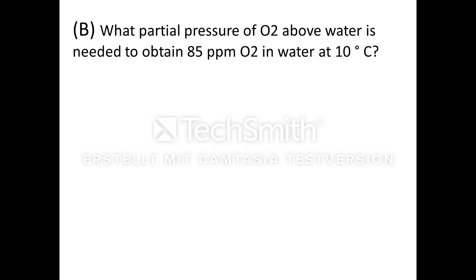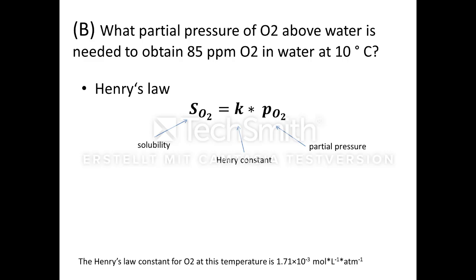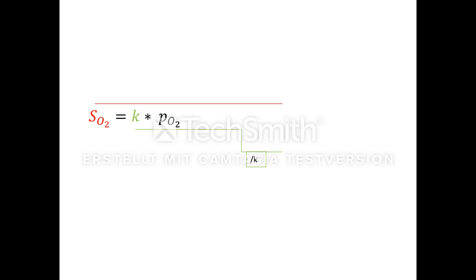Problem B: the partial pressure. To get the partial pressure we need above water to obtain 85 ppm oxygen in water at 10 degrees Celsius, we can use Henry's law. Solubility of oxygen is Henry constant multiplied with partial pressure. First of all we have to invert the formula to figure out the partial pressure. Therefore we divide by Henry constant. The formula sounds now: partial pressure is solubility of oxygen divided by Henry constant.